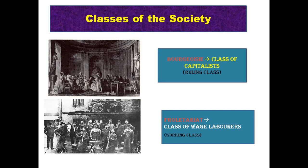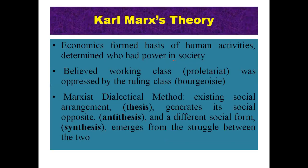According to Karl Marx, in all societies there are two major social groups: the ruling class (dominant class) and the subject class. There is the class of capitalists — the ruling class — and the class of wage laborers — the working class or subject class. Marx said that economics forms the basis of human activities, which determines who holds power in society. He believed the working class was oppressed by the ruling class, and conflict theory focuses on the unequal distribution of political and social power.